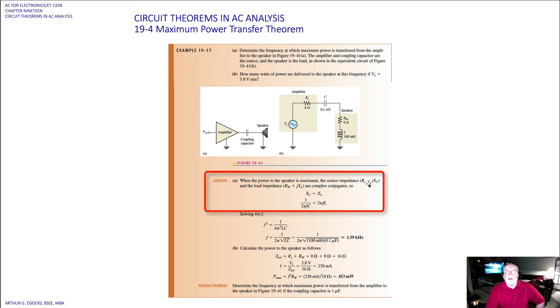When the power to a speaker is maximum, the output source R sub S minus J X sub C and the load impedance R of the winding plus J X sub L are the complex conjugates. So we know X sub C equals X sub L at maximum power transfer. We can set our two values together: 1 over 2π FC equals 2π FL. Solving for the frequency, the frequency squared is equal to 1 over 4π² LC.